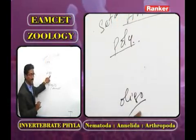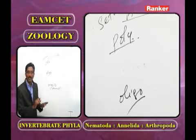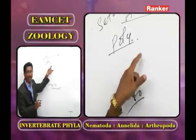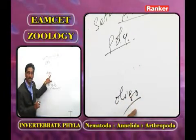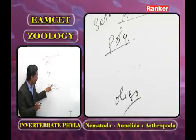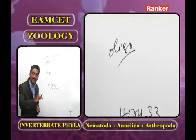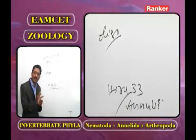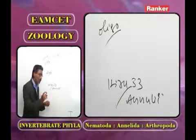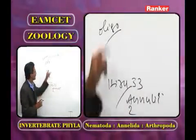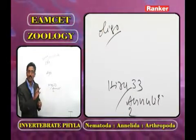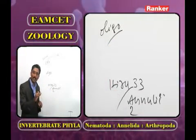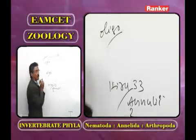In Polychaeta, all are unisexual, and cephalization is very distinct. In Oligochaeta and Hirudinea, cephalization is totally absent. The main locomotory organs in Polychaeta are parapodia with setae; in Oligochaeta, setae alone; in Hirudinea, setae and parapodia are absent and locomotion is by two suckers. In Polychaeta, the clitellum is absent; in Oligochaeta it is permanent; in Hirudinea it develops only during the breeding season.